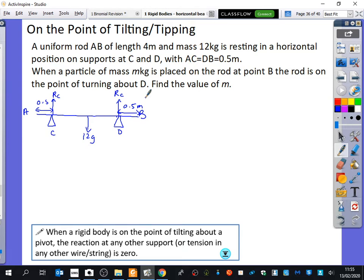It says when a particle of mass M kilograms is placed on the rod at point B, the rod is on the point of turning about D. So there is a mass M here which is being placed.